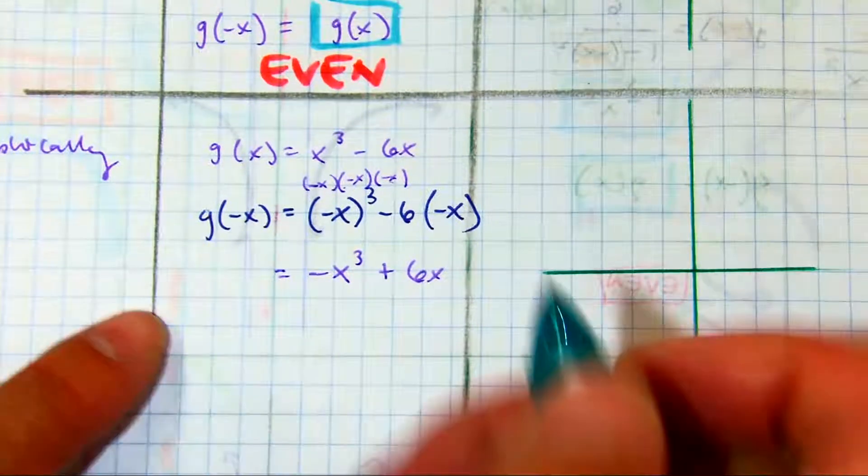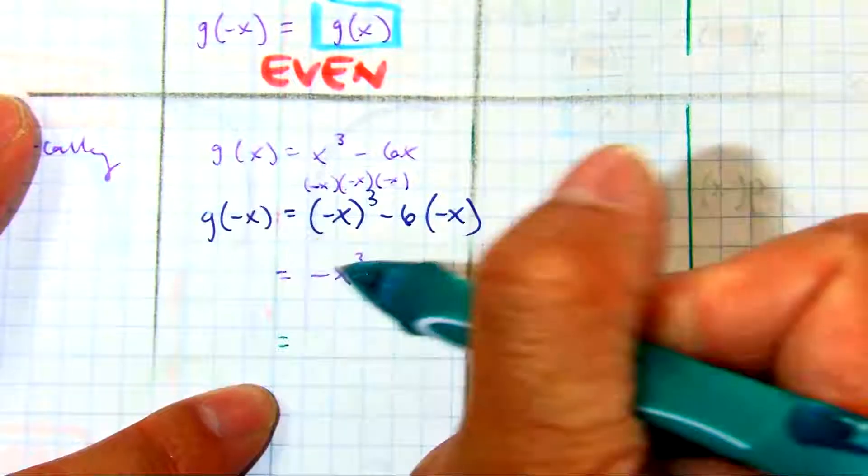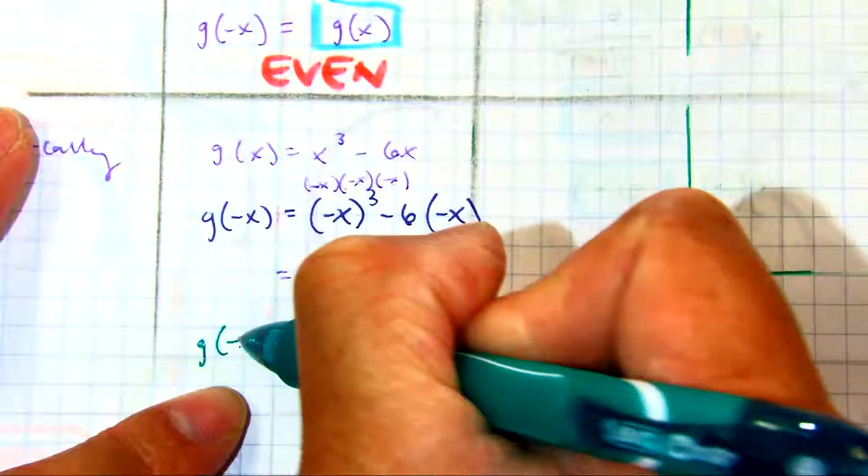you put g of x equals negative. No, g of negative x equals negative x cubed plus 6x.